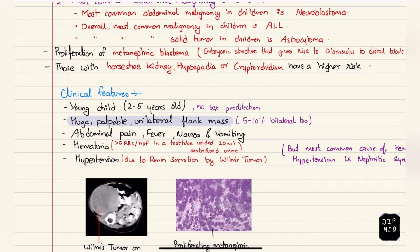These children have a huge palpable unilateral flank mass, which can be bilateral in five to ten percent. Due to this huge abdominal mass, there can be abdominal pain, fever, nausea, and vomiting.